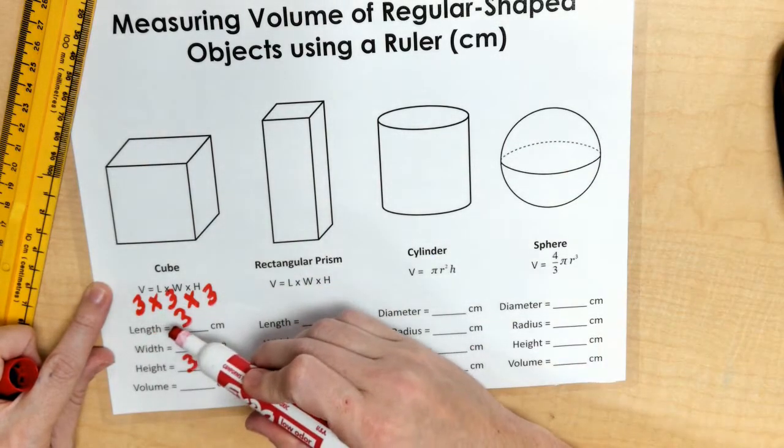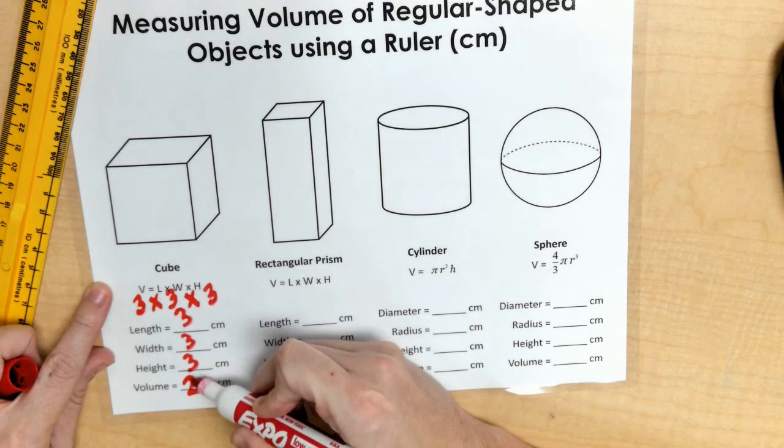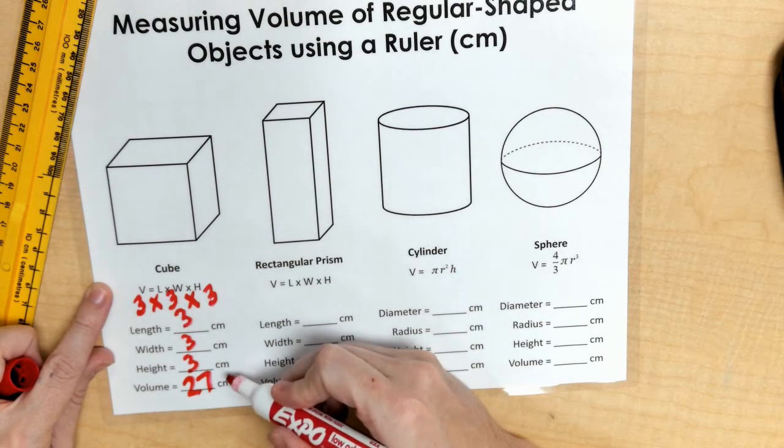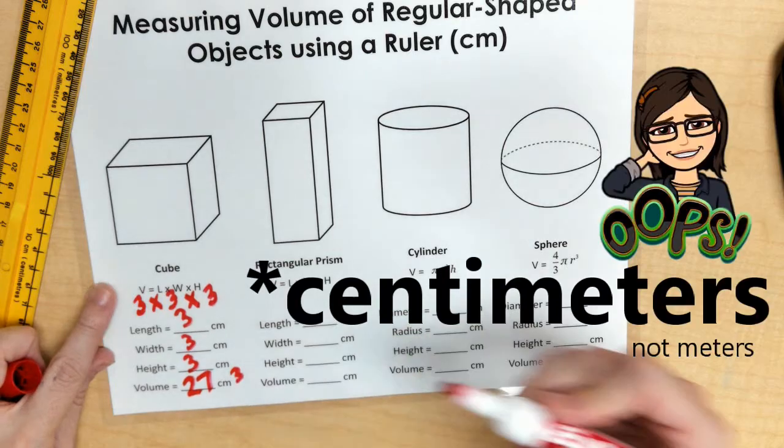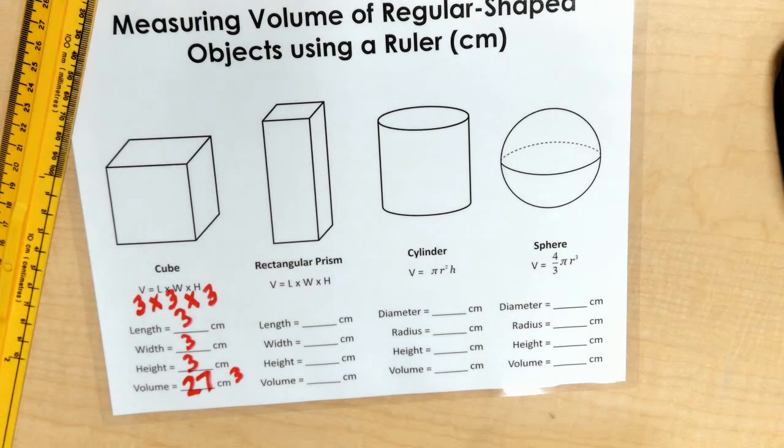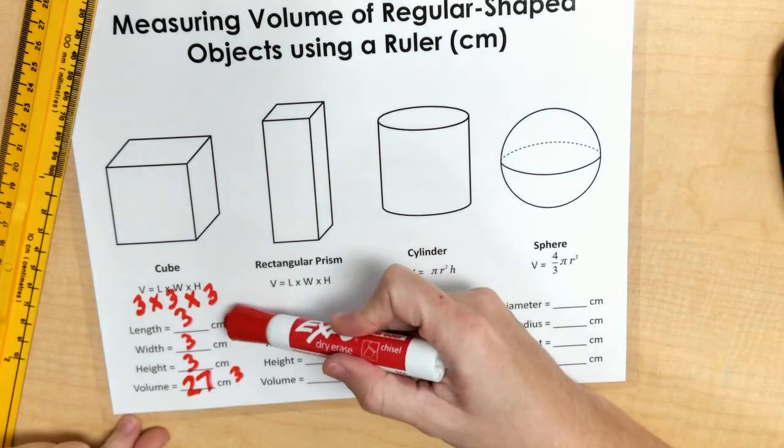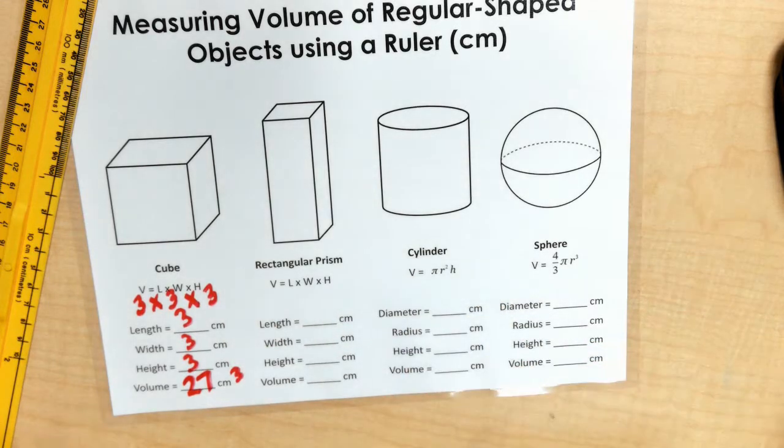3 times 3 is 9. 9 times 3 is 27. So my volume is 27 centimeters cubed. Don't forget that cubed because you're taking 3 lengths and you're multiplying them together.